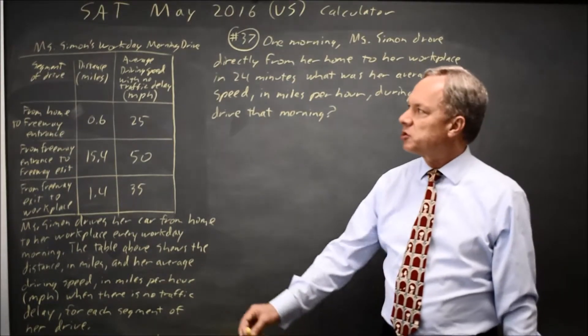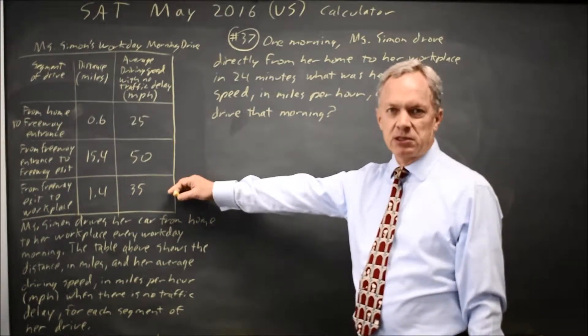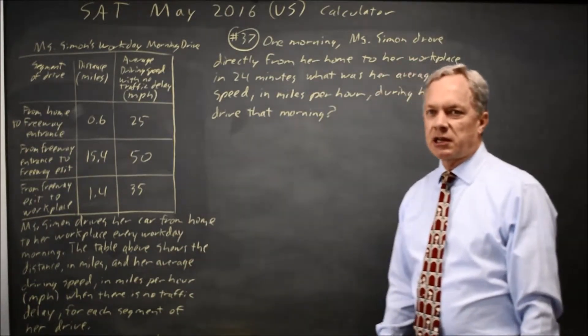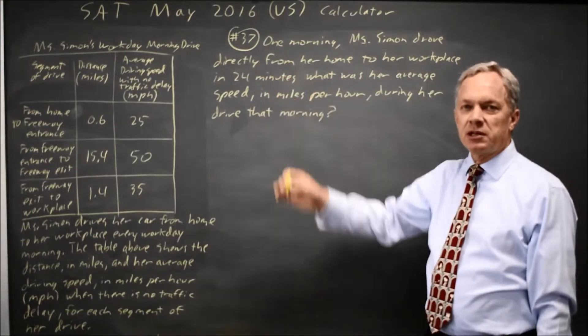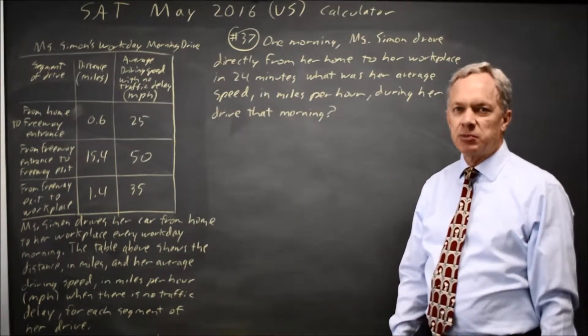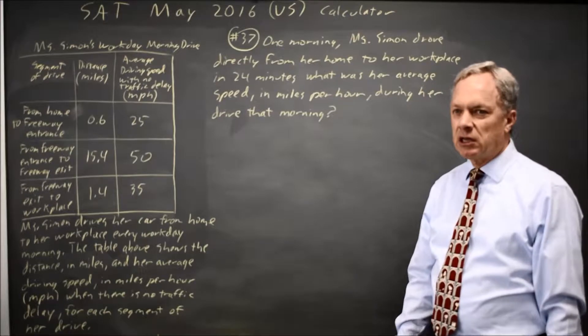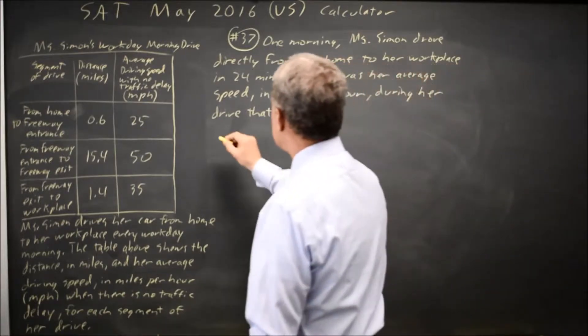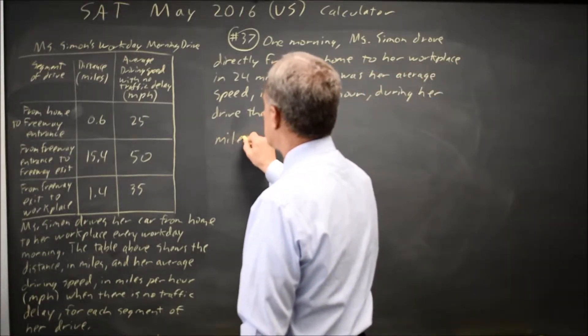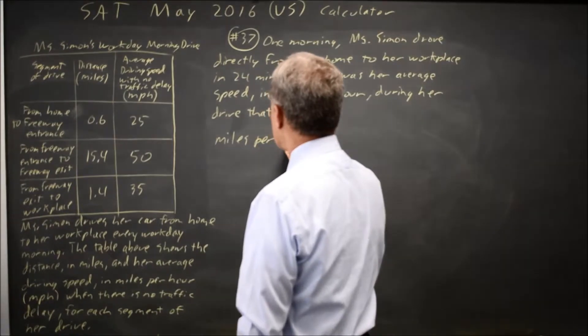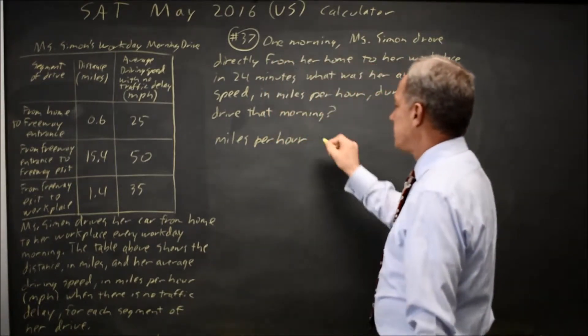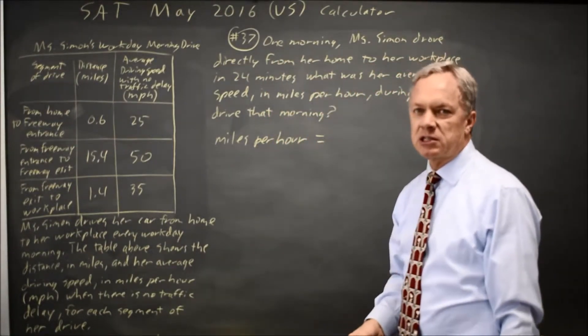College Board gives you a table showing distances and average speeds for a commute and asks if we made that commute in 24 minutes, what is the average speed in miles per hour? The units miles per hour tell you how to find this, and College Board often asks for a speed.